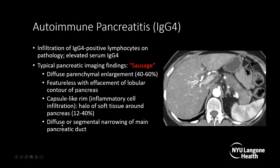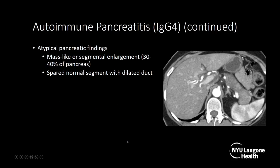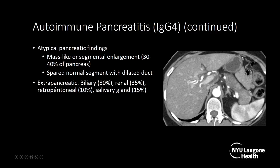In the inflamed segments, you may see diffuse or segmental narrowing of the main pancreatic duct, and the penetrating duct sign is an important distinguishing factor from adenocarcinoma. Atypical findings include mass-like or segmental enlargement of the pancreas, seen in 30–40% of cases, with the spared segment having a dilated duct. There's an association with extrapancreatic manifestations: biliary in 80% of cases, renal in 35%, retroperitoneal fibrosis in 10%, and salivary gland involvement in 15%. Treatment is with steroids.